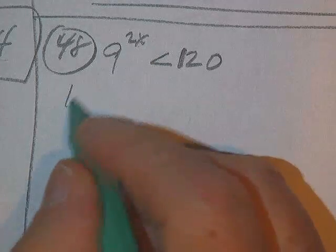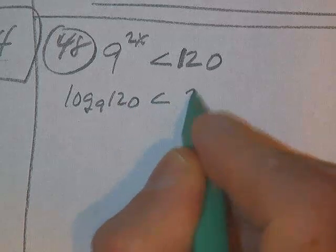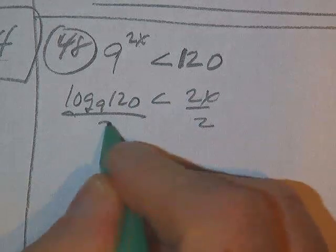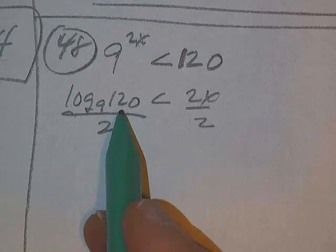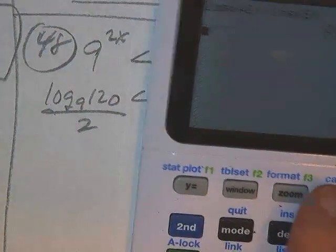Okay, same thing on this one, x in one spot. I'm going to do log base 9 of 120 less than 2x. I'm going to divide by 2. Do not divide the 2 into the 120, because that's not 120, it's log base 9 of 120.